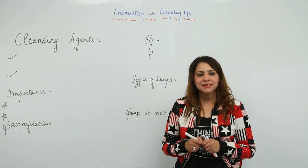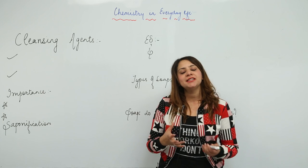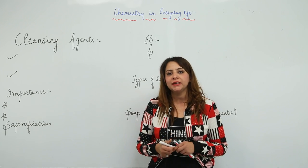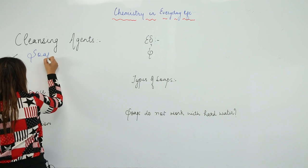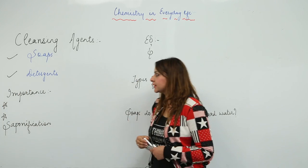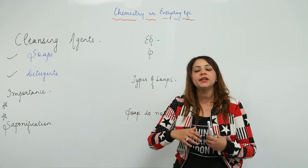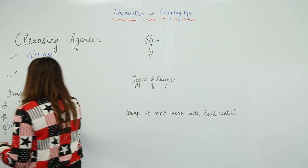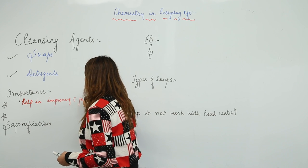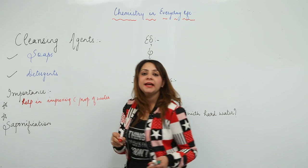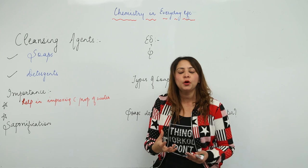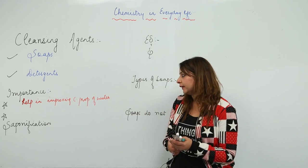We are going to start with the topic of cleansing agents. Cleansing agents are those which have cleansing properties. We come across two important cleansing agents which we are going to study here: soaps and detergents. These cleansing agents help in improving the cleansing properties of water — they get dissolved in water, and water mixed with a cleansing agent becomes capable of showing cleansing properties, helping in cleaning fabrics or skin.